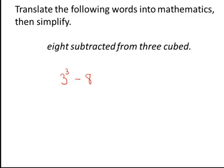Three cubed is three times three times three, which is twenty-seven. And twenty-seven subtract eight gives us nineteen as our final answer.